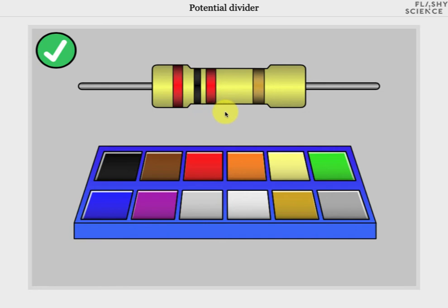And the fourth band shows the tolerance. This is gold at the moment, which means plus or minus 5%. So the actual value of resistance lies within 5% of 2,000 ohms. Of course, 5% of 2,000 ohms is 100 ohms, which means the resistor will have a resistance somewhere between 1,900 and 2,100 ohms.